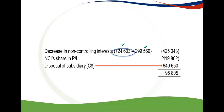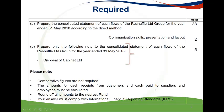The calculation of the Cabinet NCI figure has already been discussed. As NCI increases on the credit side, the profit for the year attributable to NCI given on the consolidated statement of profit and loss will be credited. The resultant figure is the actual value by which NCI was adjusted to account for the change in percentage holding. Part B of the required asked for the disclosure note to the consolidated cash flow statement for the disposal of Cabinet Limited — this has already been discussed.